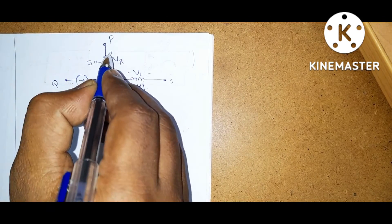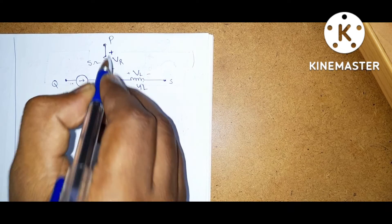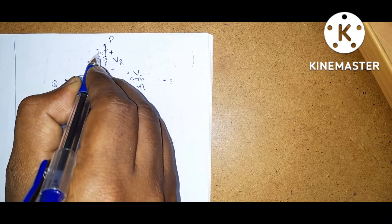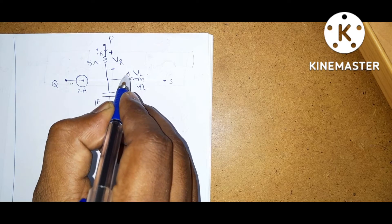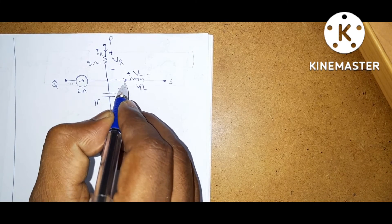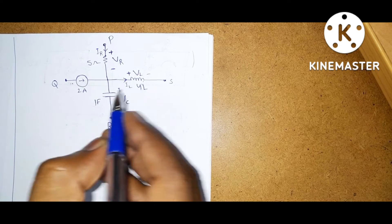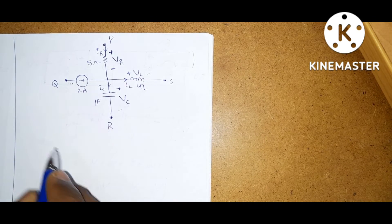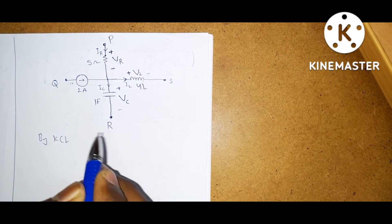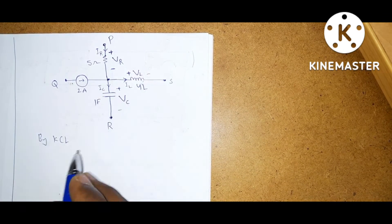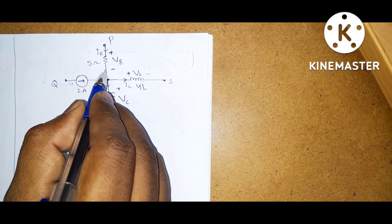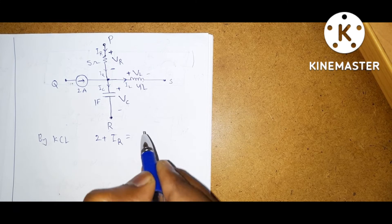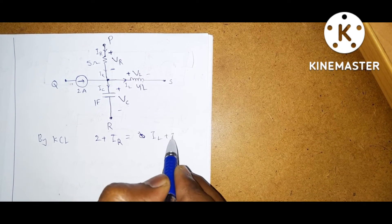For this passive element, it is indicated positive here and negative here. Positive means current should enter here — let it be IR, the current flowing through R is IR. Here this is plus, so current should enter here — let it be IL, the current flowing through the inductor is IL. And here this is plus, so current should enter here — let it be IC. Now by KCL, applying KCL at this node: 2 plus IR is equal to IL plus IC.